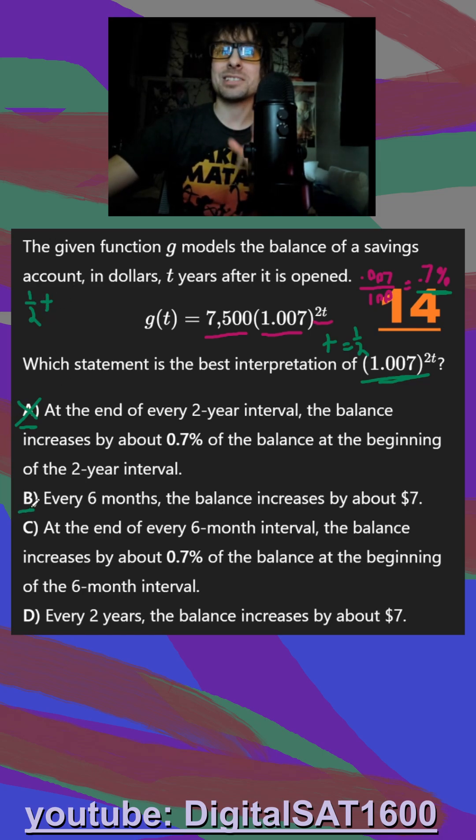In B, every six months, the balance increases by about $7. That's not true. We're looking for a 0.7% increase.